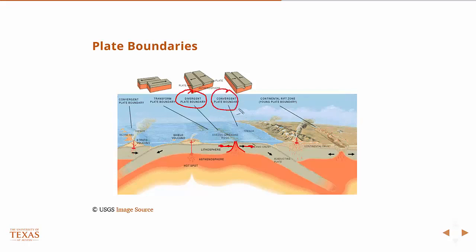A convergent plate is where two plates are coming together. And then you typically have one plate subducting under the other. So this is, if you can't read that, that's subduction.